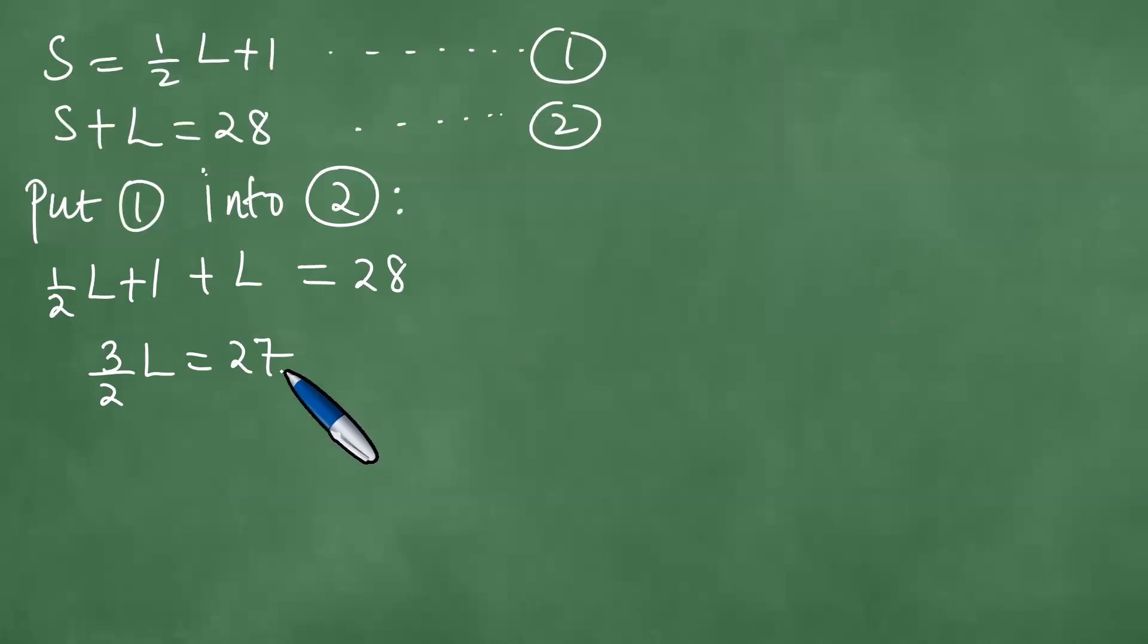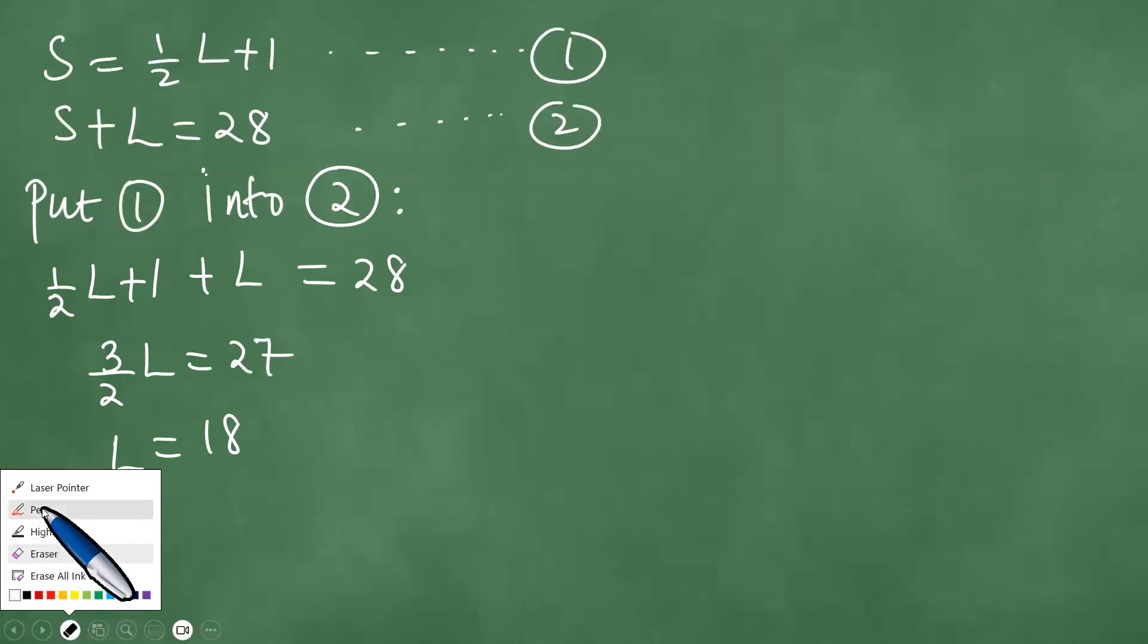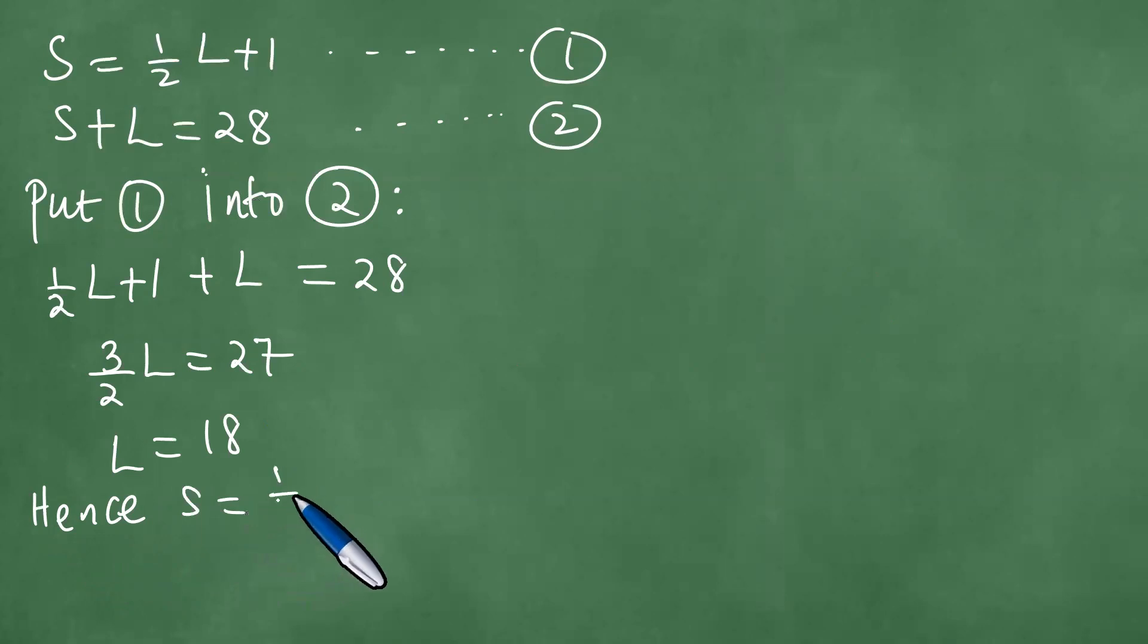Right. So that now you divide by three, then multiply by two, getting L equals 18. Hence, what we have is that S equals one half L plus one, which is one half L. L is 18 plus one. 9 plus one, 10. 10 meters, 18 meters.